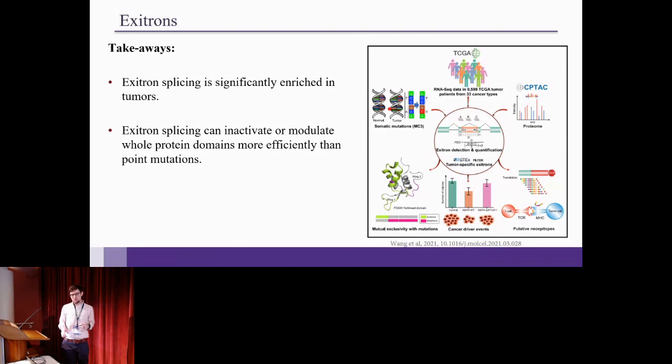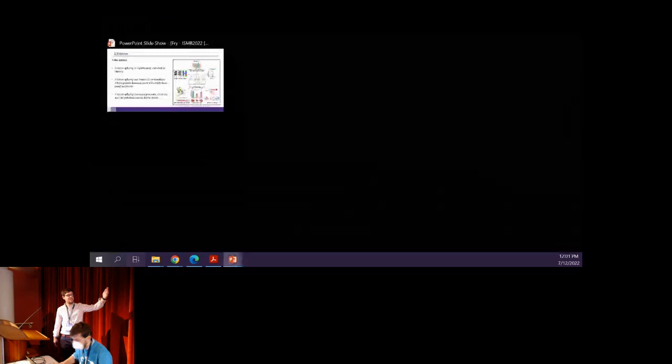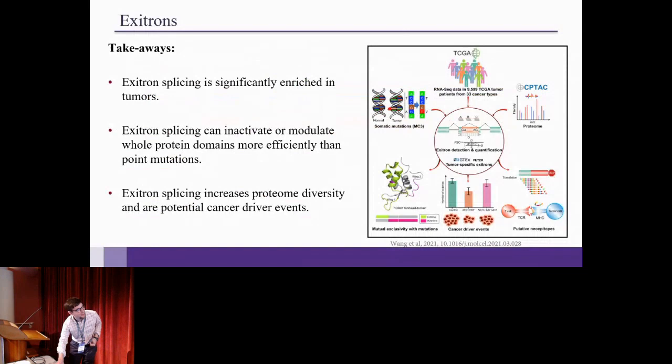And they showed, as you can see in the bottom left there, there's the FOXA1 gene, and there's an exotron in the fork head binding domain that if there's an exotron that's detected in there. So exotron splicing generally increases proteome diversity and their potential cancer driver events.